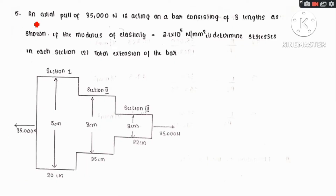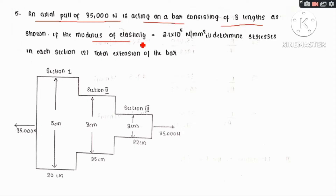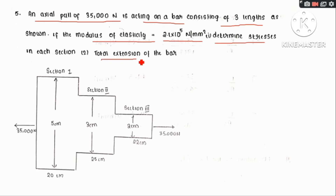First problem: an axial pull of 35,000 N is acting on a bar consisting of 3 lengths. As shown, if the modulus of elasticity is equal to 2.1 × 10⁵ N per mm², determine the stresses in each section and the total elongation or extension of the bar.